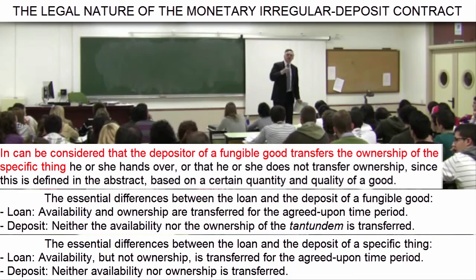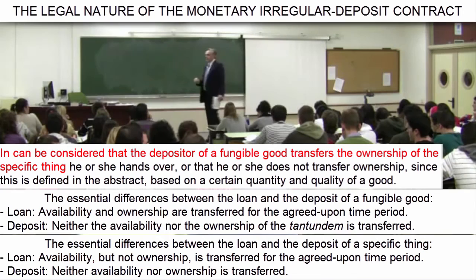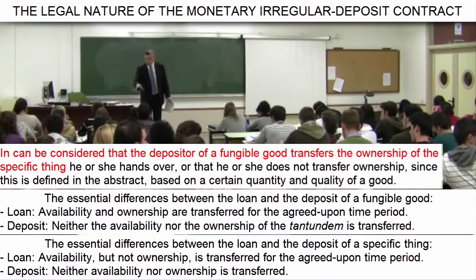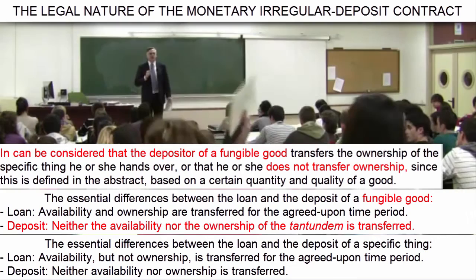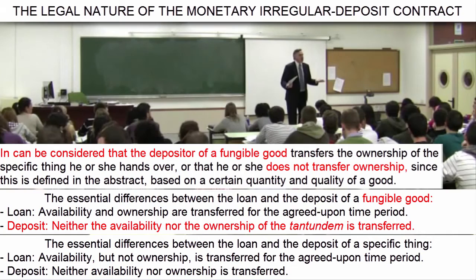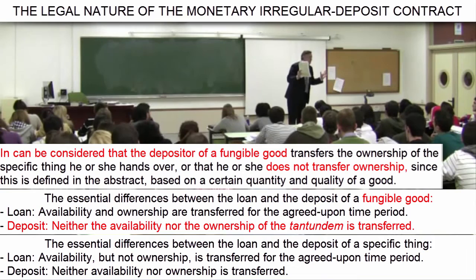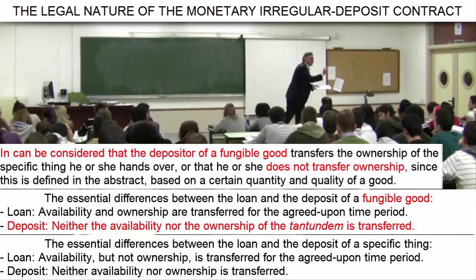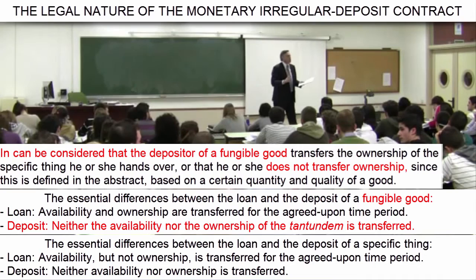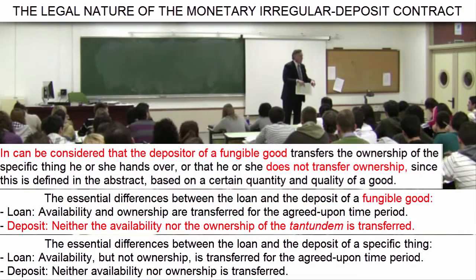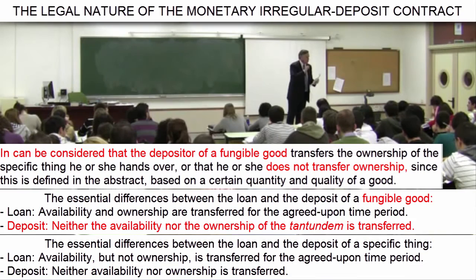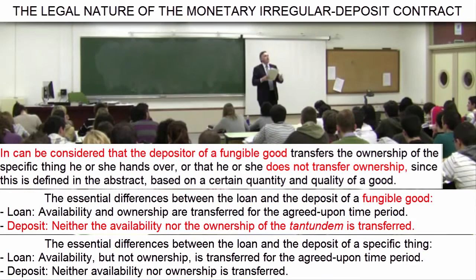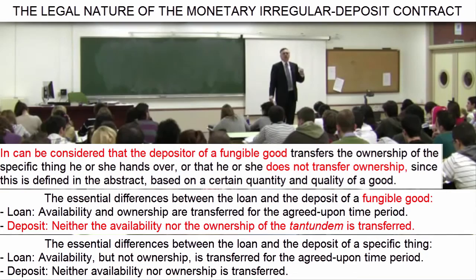The depository will not be obliged to return the very same molecules or particles of oil, the very same grains of wheat, or euro banknotes with specific numbers, but the equivalent in quantity and quality. The second theory holds that not even ownership is transferred, because in the deposit of fungible goods, what is taken into account is ownership in the abstract, based on the equivalent in quantity and quality. Ownership does not reside in the specific particles of oil or specific grains of wheat or banknotes with specific numbers that the depositor hands over.